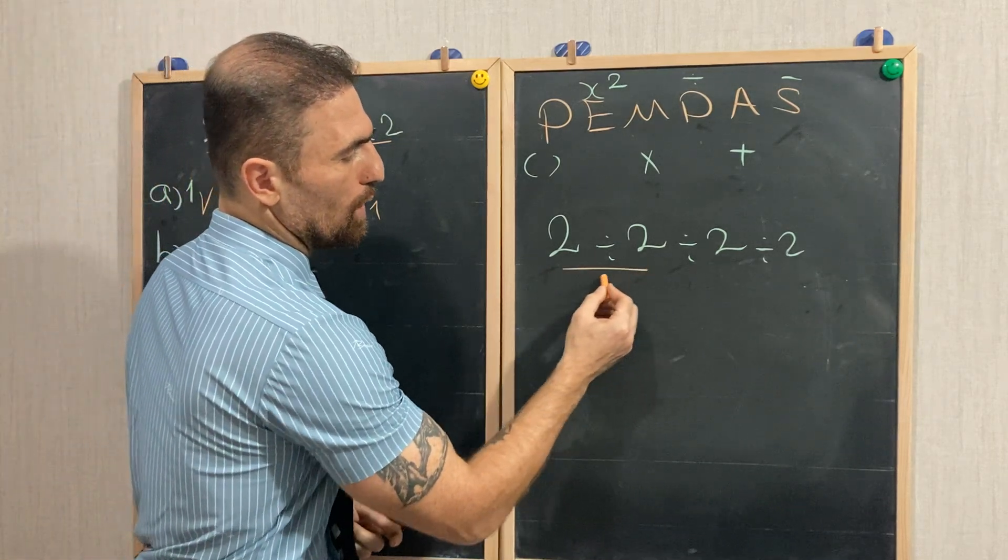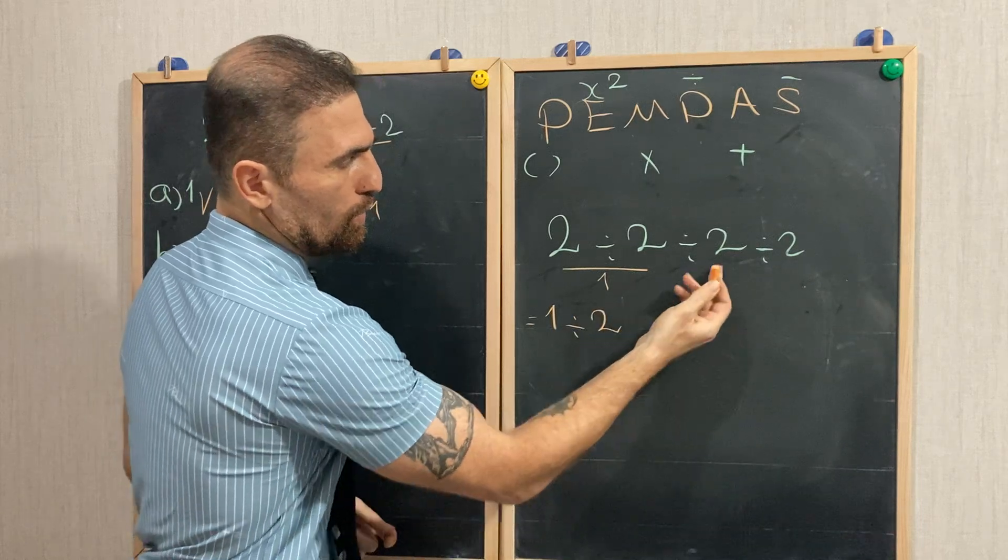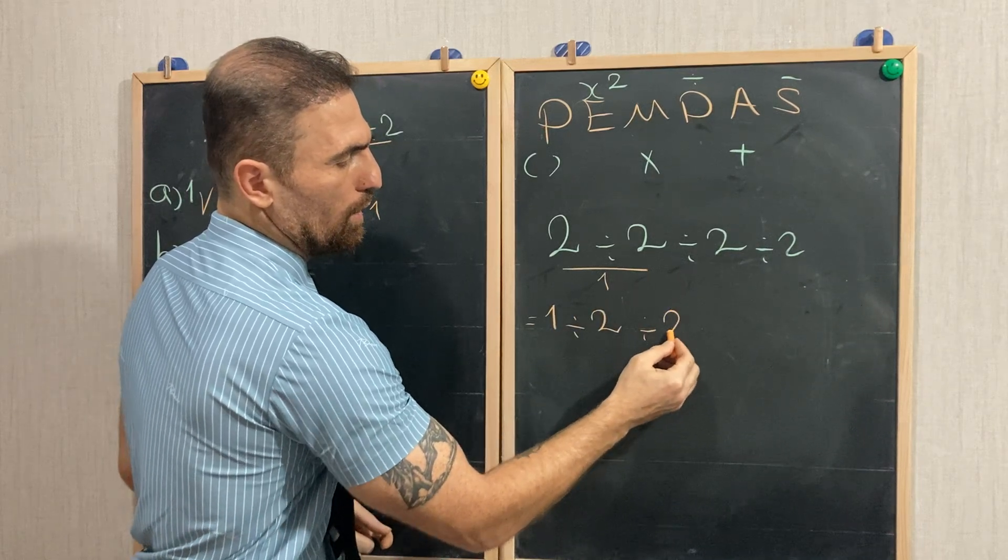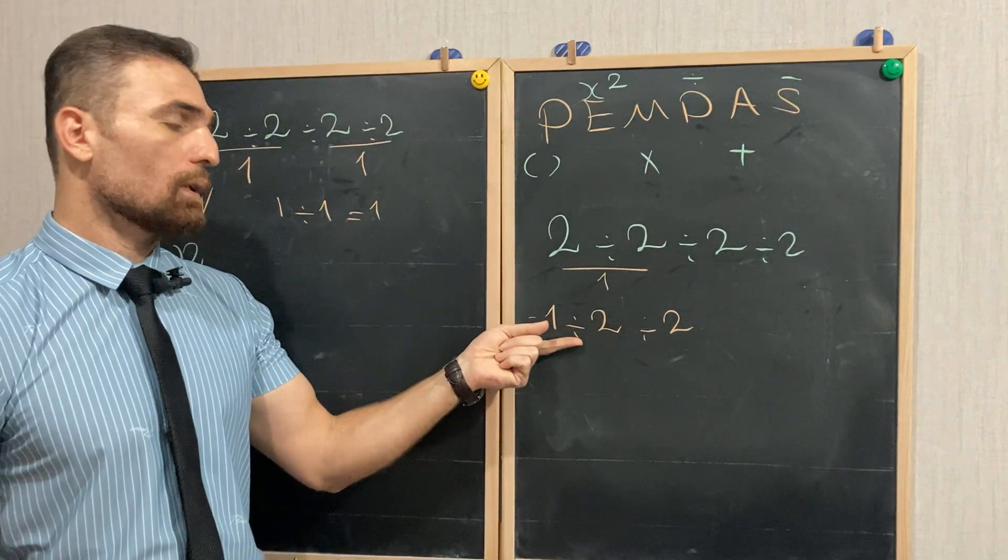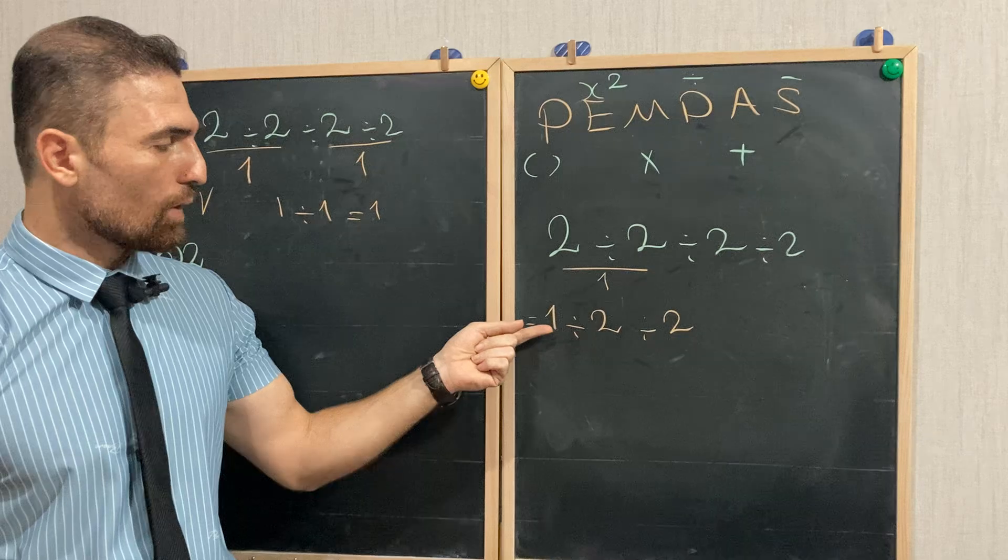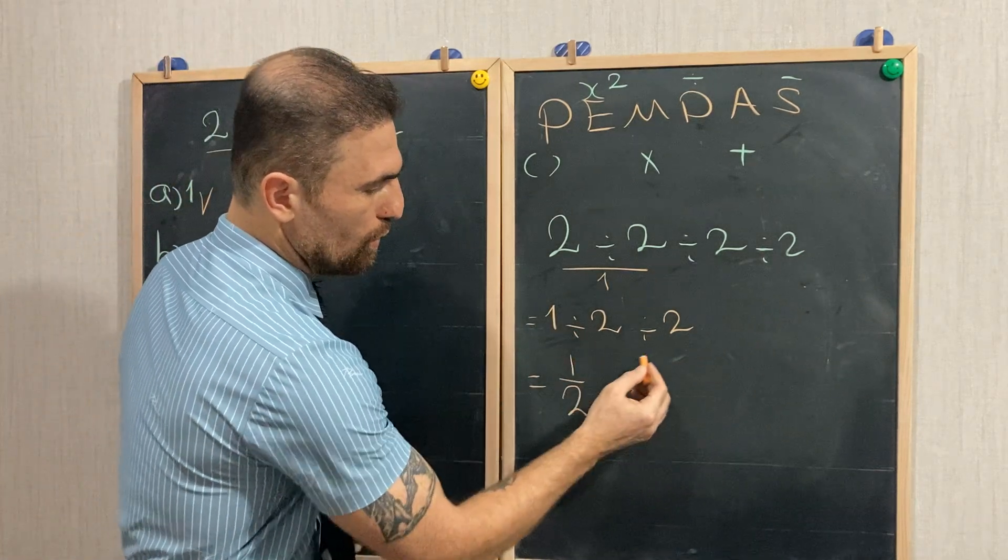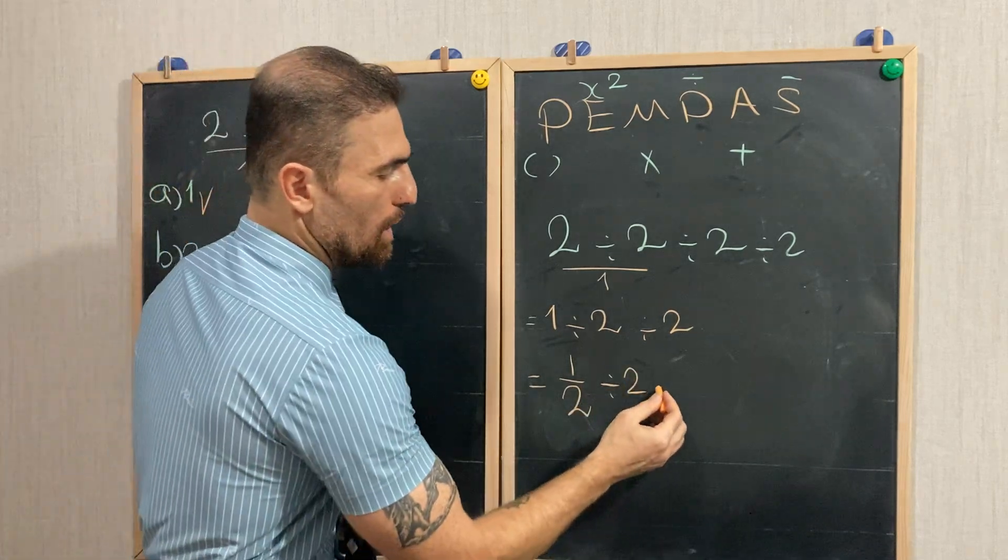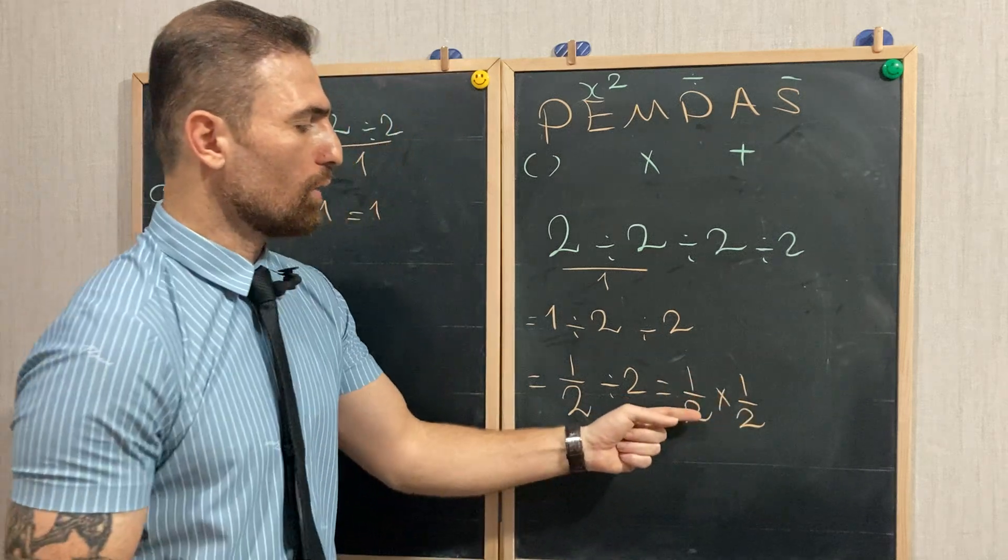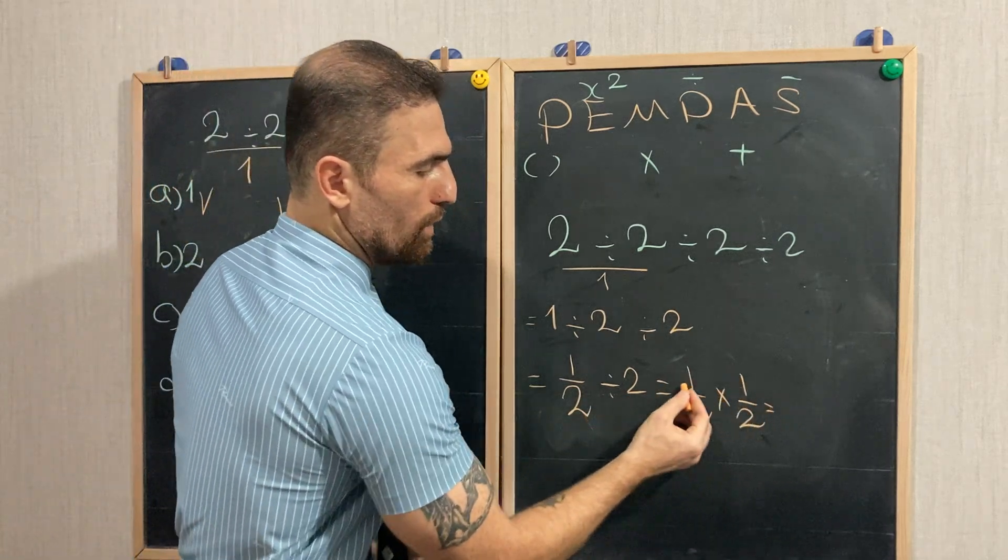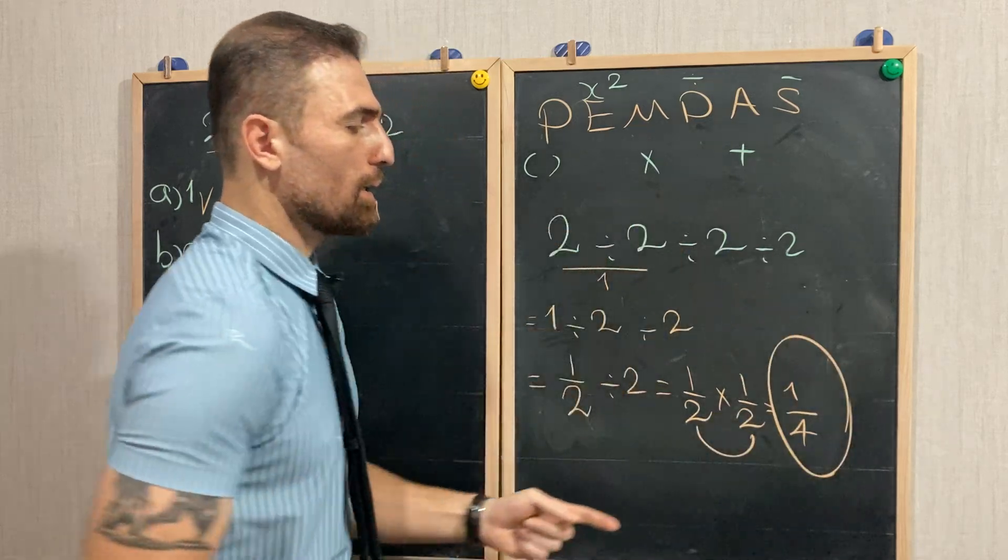So we need to start from this division. 2 divided by 2 equals 1. It's going to be 1 divided by 2 divided by 2. Now again, we have two divisions. Which one? The left one. This one. 1 divided by 2. 1 divided by 2 equals 1 over 2 divided by 2. And it is the same as 1 over 2 times 1 over 2. 1 over 2 times 1 over 2 equals 1 times 1 equals 1, and 2 times 2 equals 4. And this is our answer.